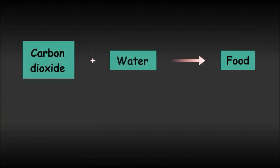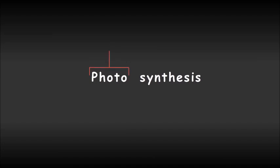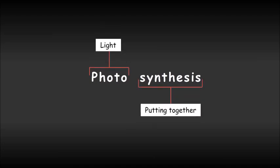The process of preparing food by plants from carbon dioxide and water using sunlight is called photosynthesis. The term photosynthesis comes from two words: photo meaning light and synthesis meaning putting together.